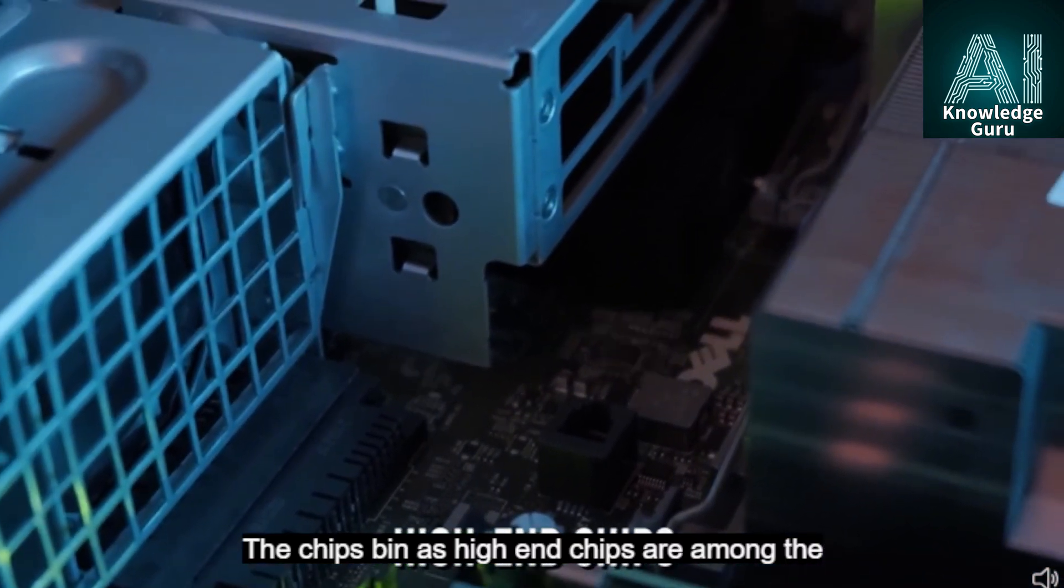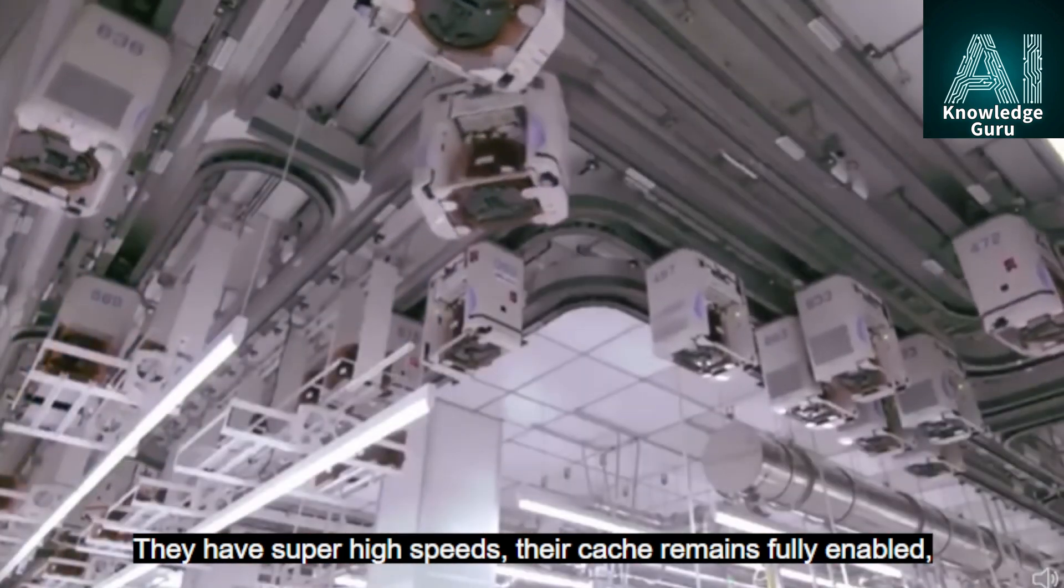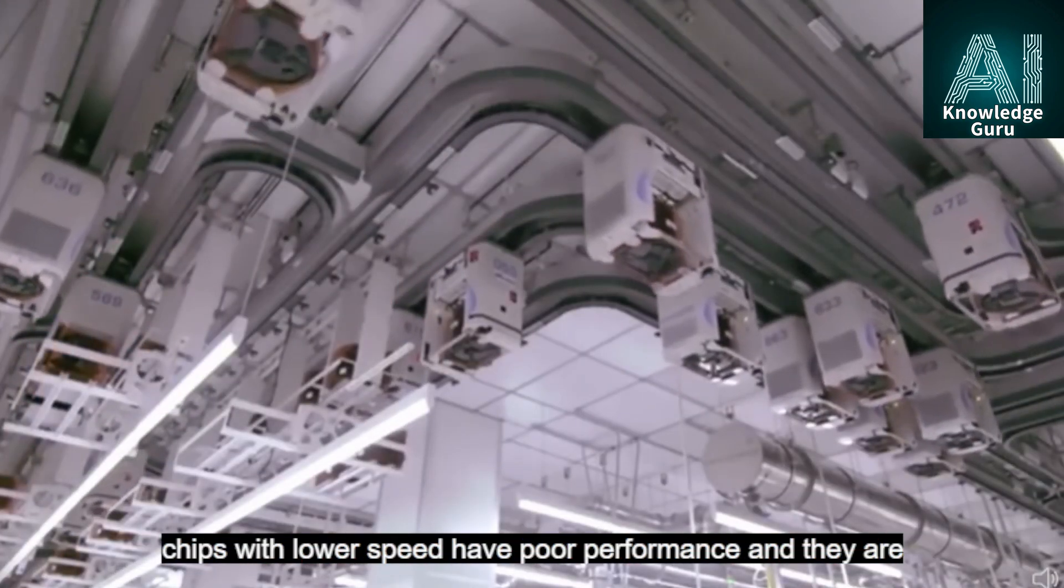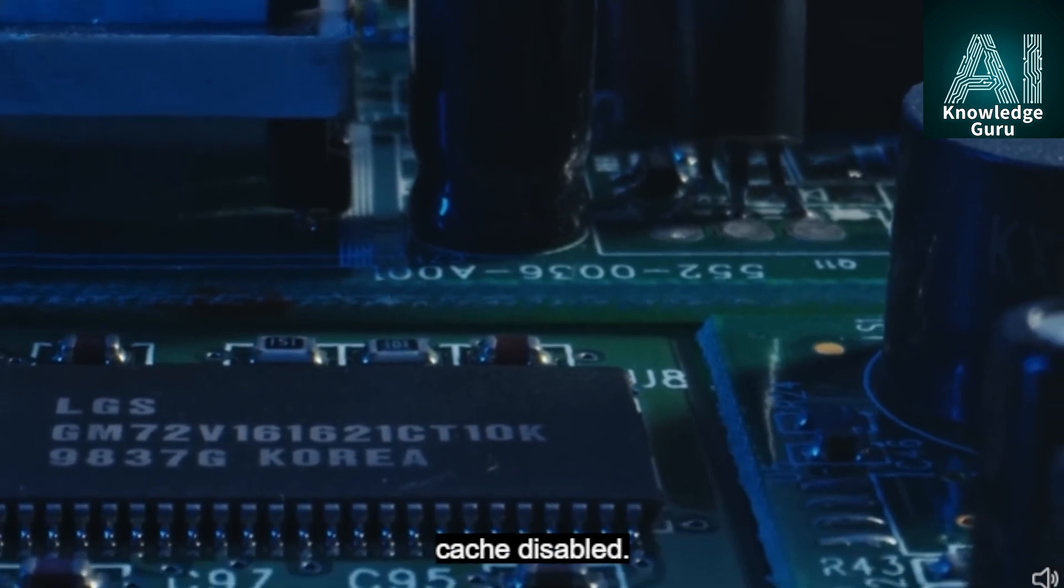The chips binned as high-end chips are among the best chips of the CPU. They have super high speeds. Their cache remains fully enabled. Chips with lower speed have poor performance and they are sold off.